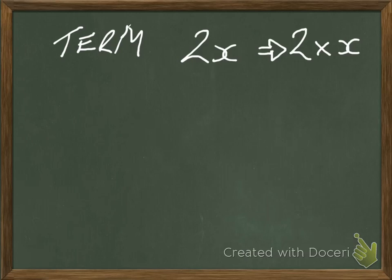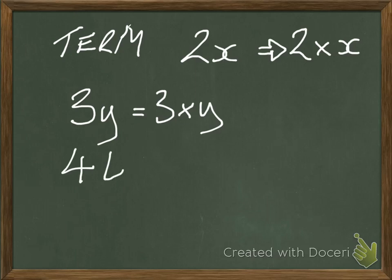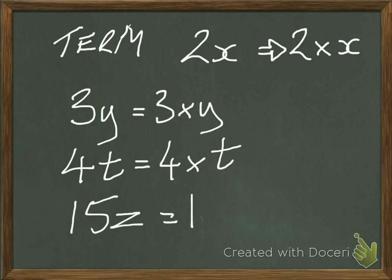But for shorthand we just write, say, 3y. So that means 3 times y. Or, I don't know, 4t. That is 4 times t. What else could we have? Let's have, I don't know, 15z. And that just means 15 times z.